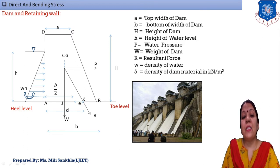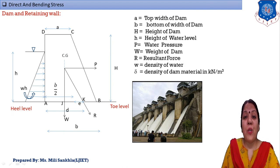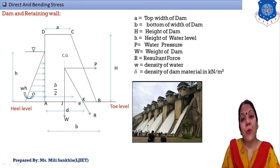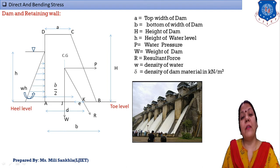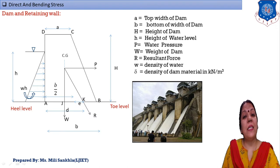'R' is the resultant force induced by water pressure P and the self weight W of the dam. This resultant force R cuts the base at point K. 'w' (small) = density of water, with units of kilo-Newton per meter cube. The density of the dam material used for construction also has units of kilo-Newton per meter cube.